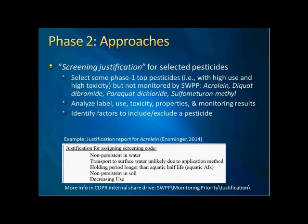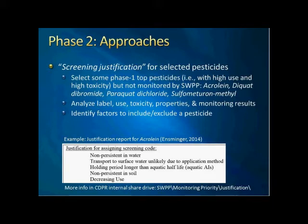Unlike the phase one development, phase two started with manual investigation on selected pesticides, called screening justification, which was mainly conducted by April, Mike, and Rob. We examined some phase one pesticides not currently monitored by the surface water program and conducted a comprehensive analysis of their annual use, chemical properties, and historical monitoring results, trying to identify parameters that can explain monitoring decisions.